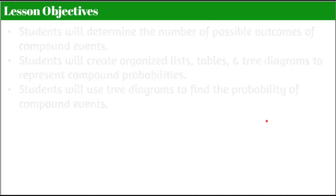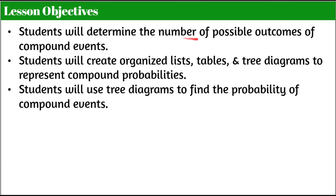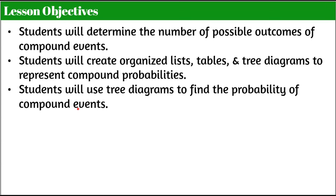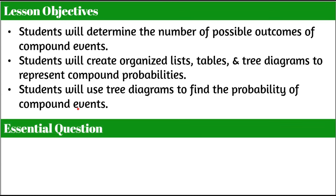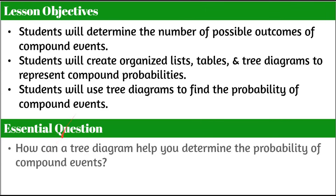Our learning objectives. You, the student, will determine the number of possible outcomes of compound events. You will create organized lists, tables, and tree diagrams to represent compound probabilities. And you will use tree diagrams to find the probability of compound events. Here's the question I'd like you thinking about as we proceed through the lesson today: how can a tree diagram help you determine the probability of compound events?